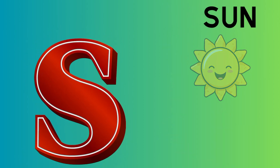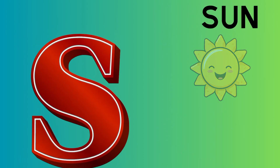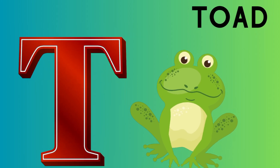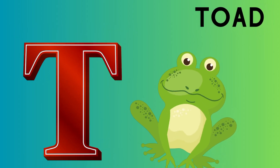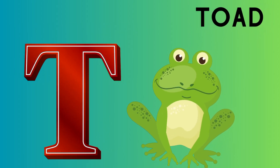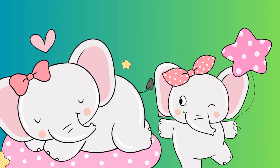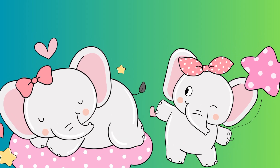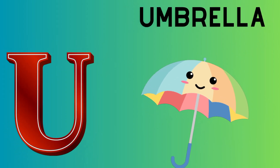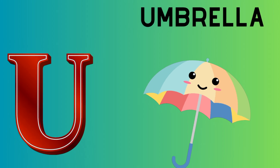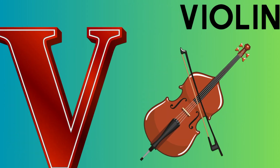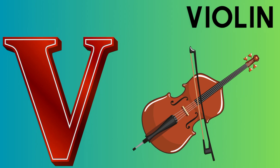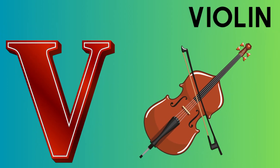S is for sun, s-s-sun. T is for toad, t-t-toad. U is for umbrella, u-u-umbrella. V is for violin, v-v-violin.